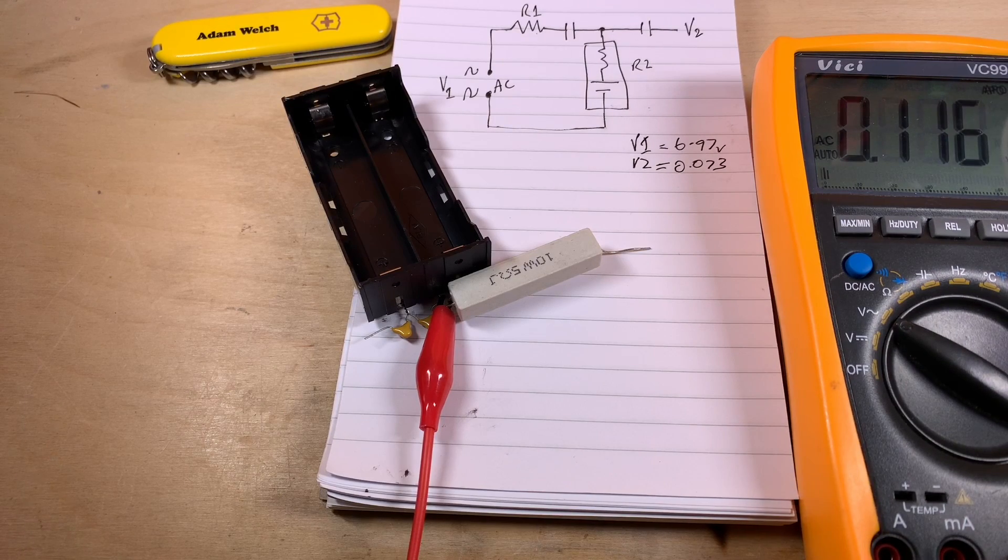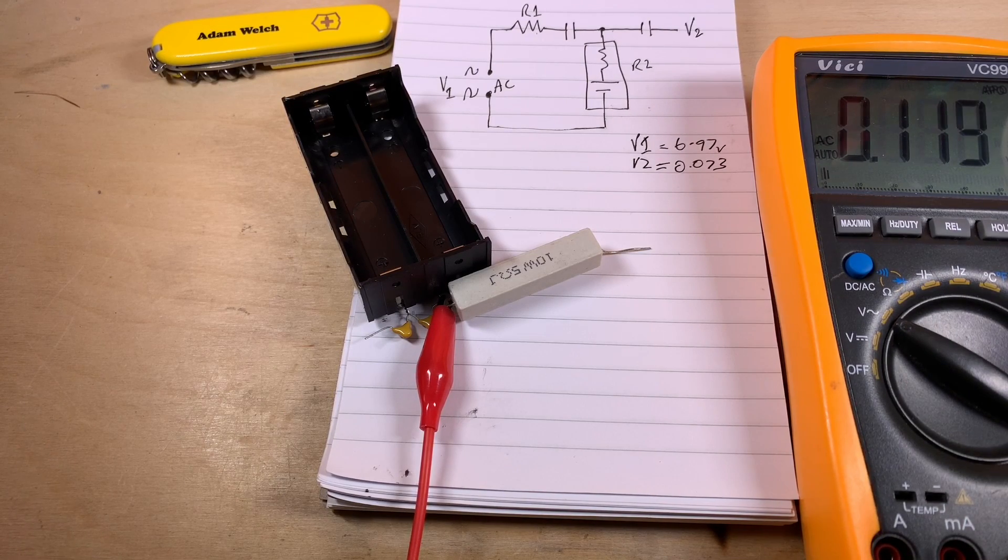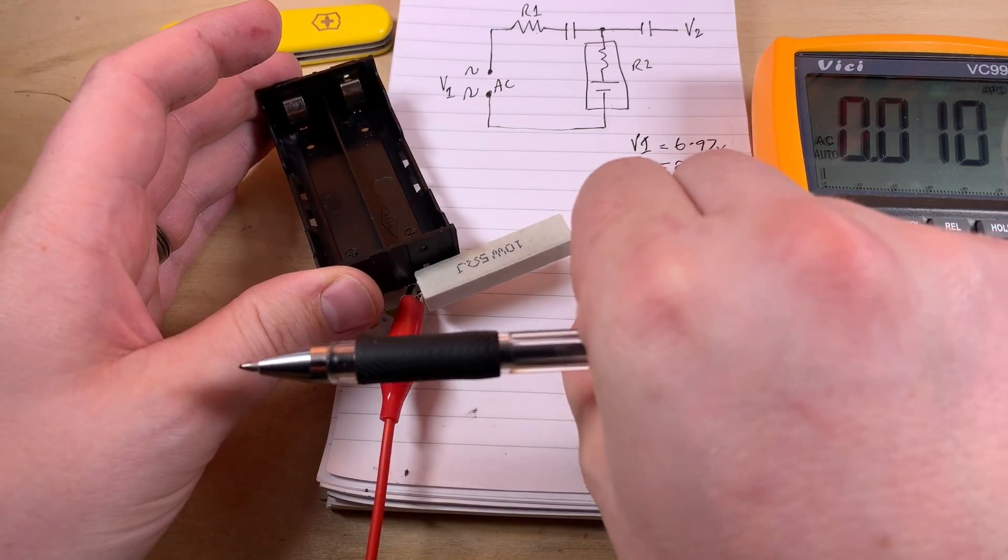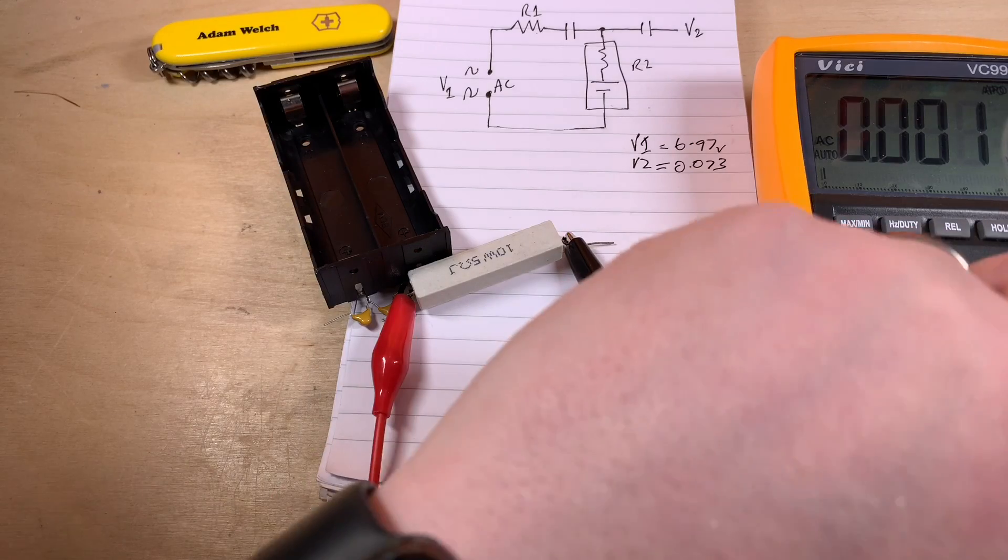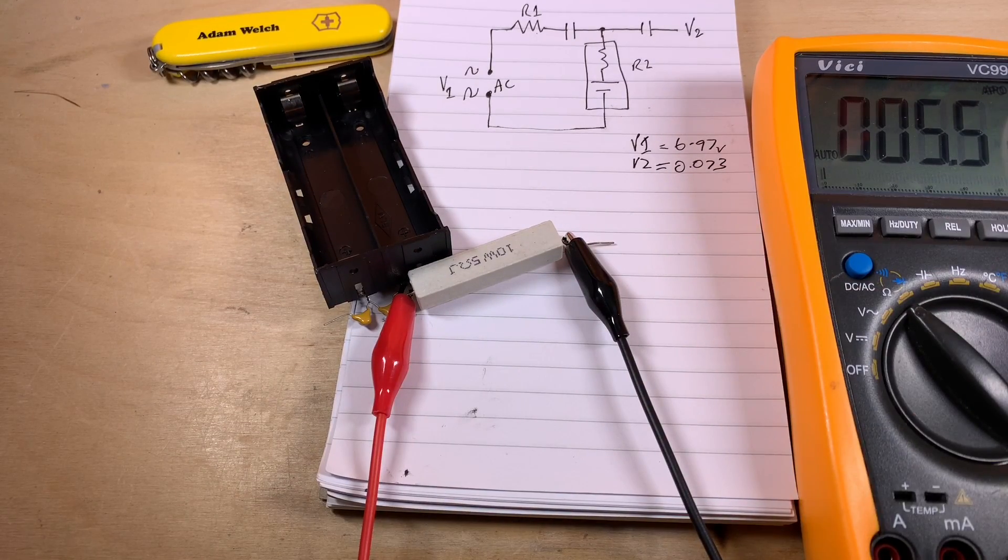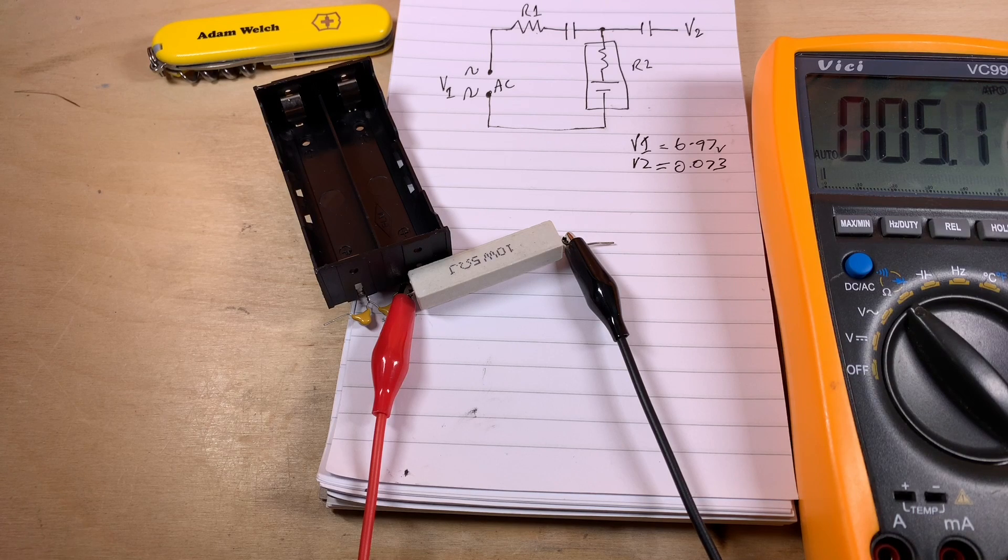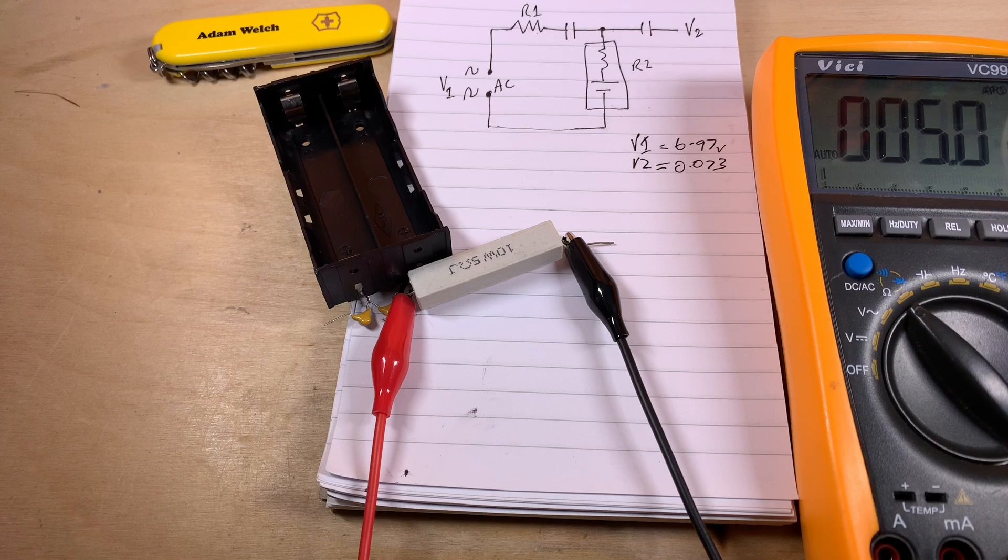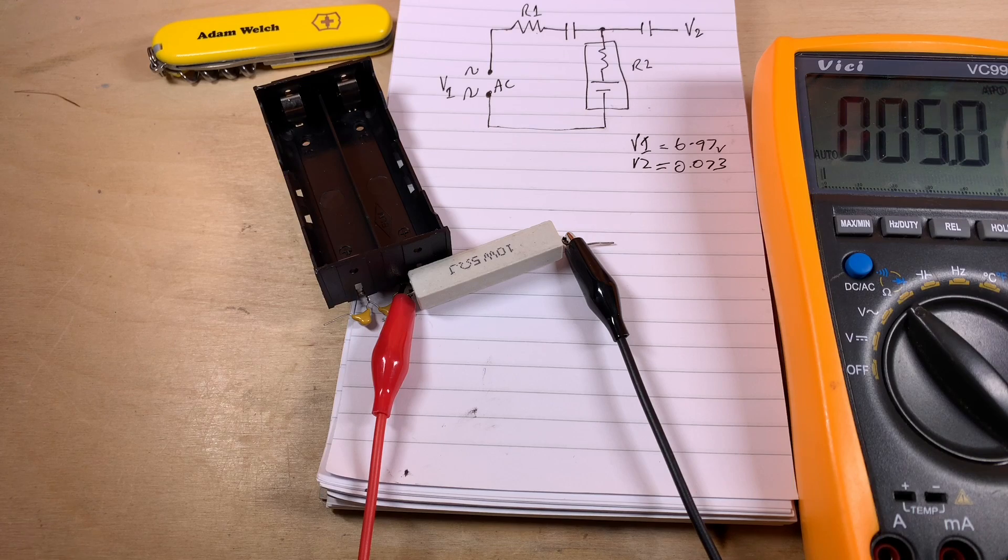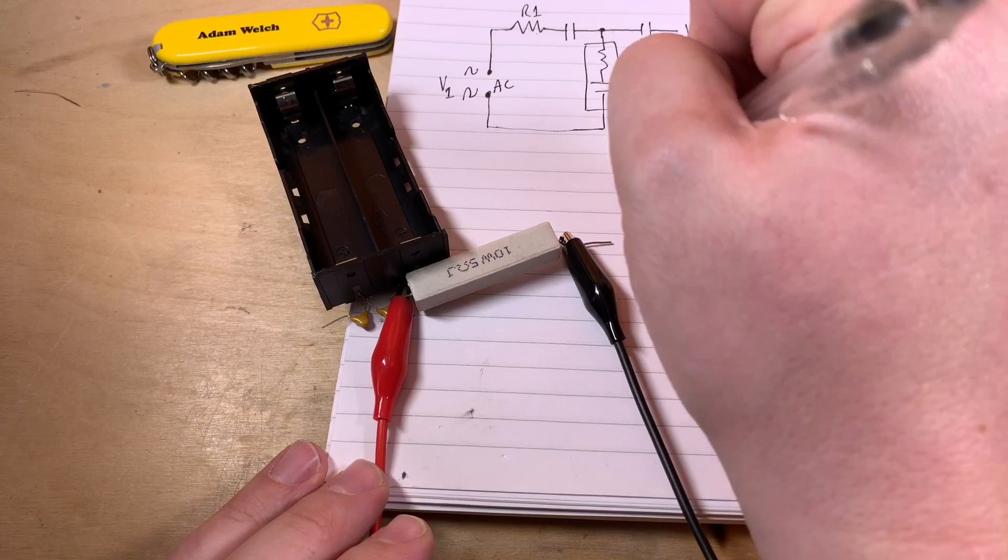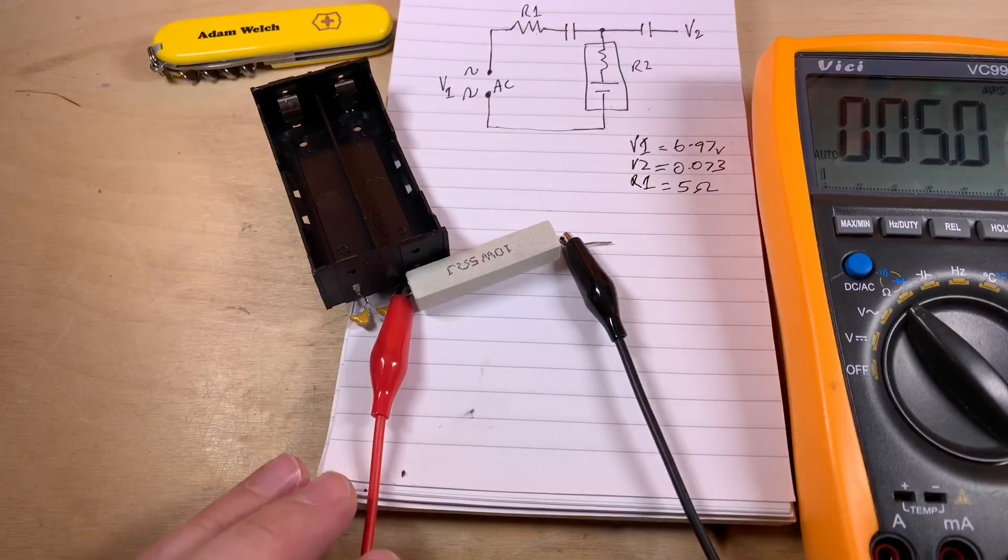Now I've cleared away some bits and pieces that I don't need right at this minute, but of course the last thing I need to do is check the value of this claimed 5 ohm resistor. And what does the Vicky say? I think we can go with 5 ohms. So R1 equals 5 ohms. Perfect.